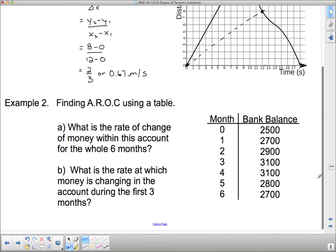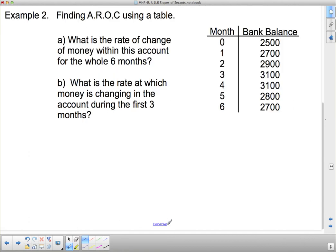Example 2: Finding the AROC using a table. What is the rate of change of money within this account for the whole six months? So I've got a month and I've got a bank balance. We want to find the rate of change during the whole six months, the average rate of change. And remember, we're not concerned with the details along the way. We want the change in y over the change in x. In this case, month is the thing that's holding steady, so that's our x value. And the bank balance is the thing that changes. The bank balance depends on the month of the year, so that's our y.